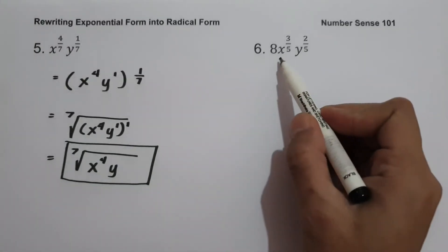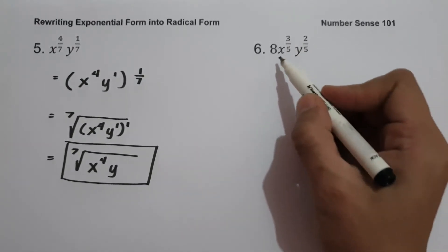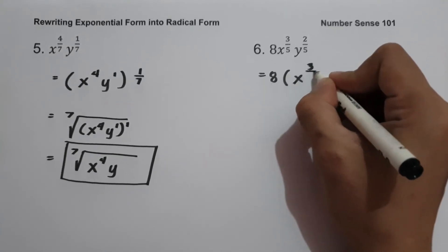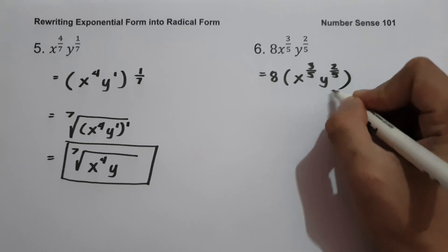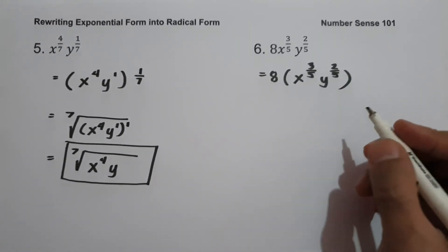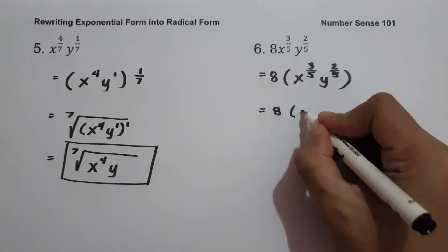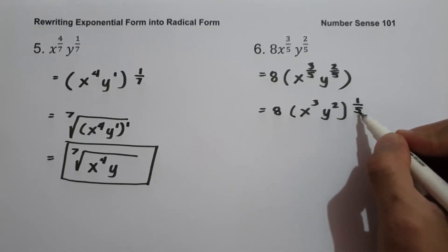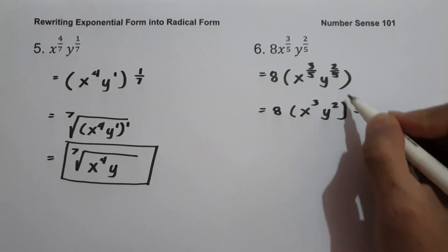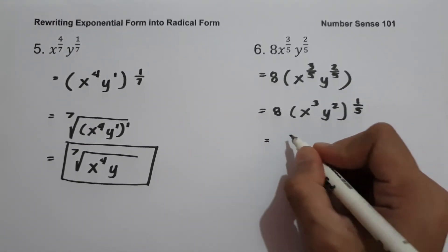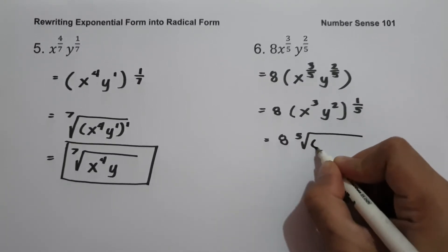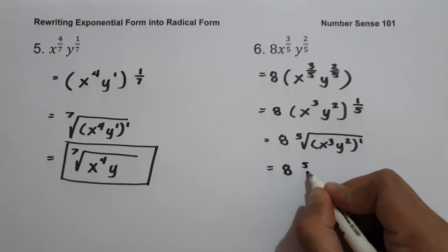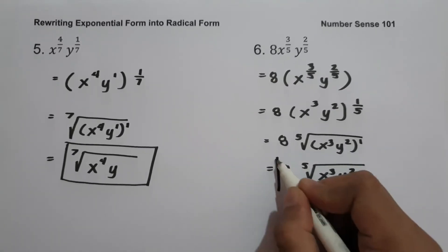On example number six: 8x raised to 3 over 5, y raised to 2 over 5. Since 8 is not being raised by 3 over 5, we write this as 8 times quantity x raised to 3 over 5, y raised to 2 over 5. Since the exponents of x and y have the same denominator, we write this as 8 times quantity x raised to 3, y raised to 2, all raised to 1 over 5. Because 3 times 1 over 5 is 3 over 5, and 2 times 1 over 5 is 2 over 5. So we write this as 8 times the 5th root of quantity x cubed y squared raised to 1, or 8 times the 5th root of x cubed y squared. And this will be our answer.